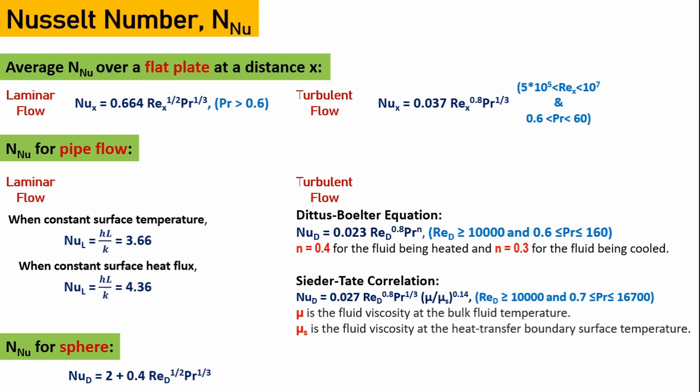For fluid flowing on a flat plate, we have different relations depending on whether the flow is laminar or turbulent. For pipe flow in the laminar regime, there are two conditions: when the surface temperature is constant, the Nusselt number is 3.66, and when the heat flux is constant, the Nusselt number is 4.36.